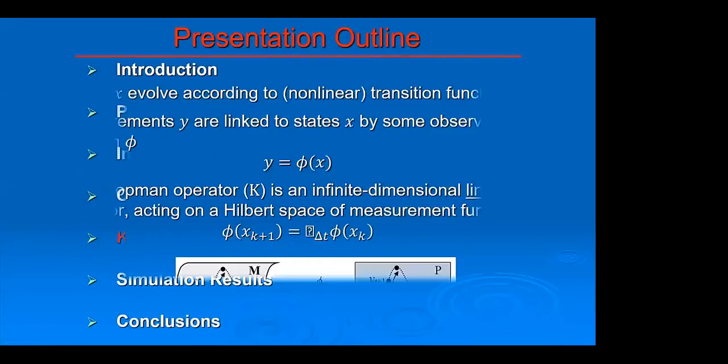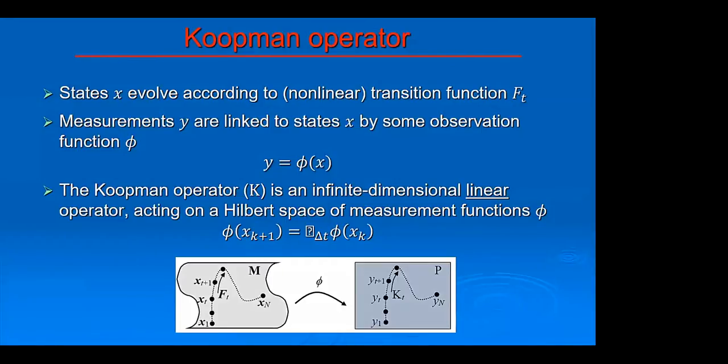When it comes to Koopman operator, let's assume that we have states x that evolve in some way. From current moment to the next moment, we get by some transition function which can be highly complicated, non-linear - we might not have it in explicit form. Because this is non-linear, the idea is to move to some other space with some function phi and hope that in that other space, when we get variables y, maybe the evolution of those variables will be linear. And this indeed is the case.